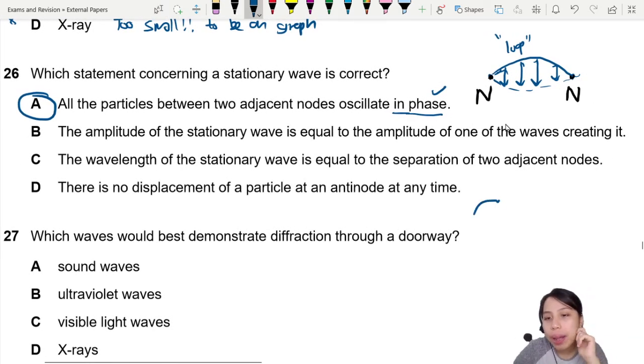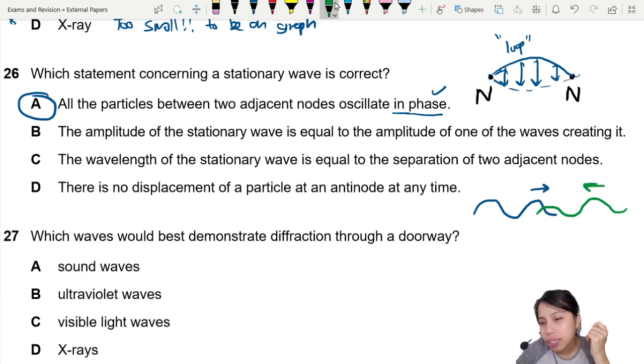Stationary wave is when one wave travels in this direction and another wave travels in this direction, and they overlap. Then they form stationary wave. This is called the incident and reflected. Incident wave, reflected.